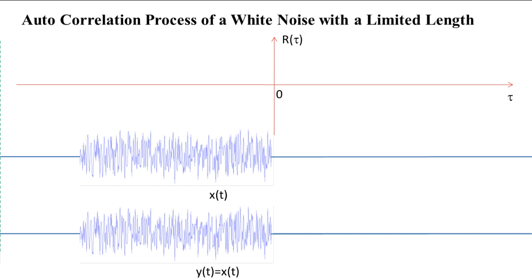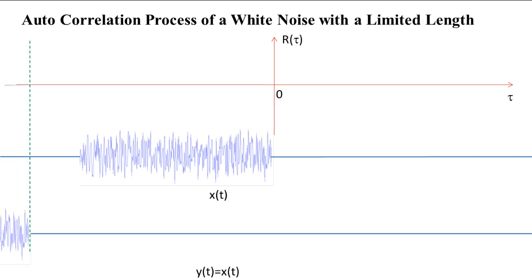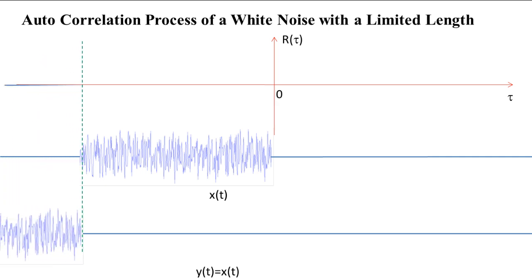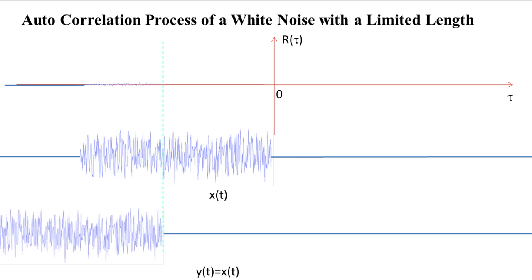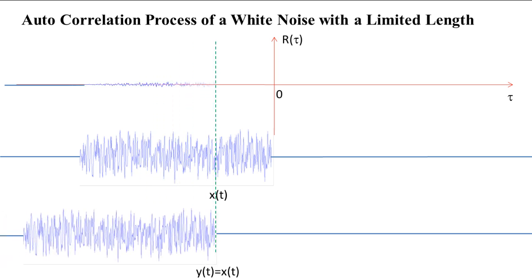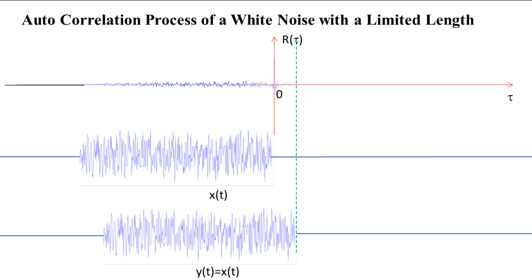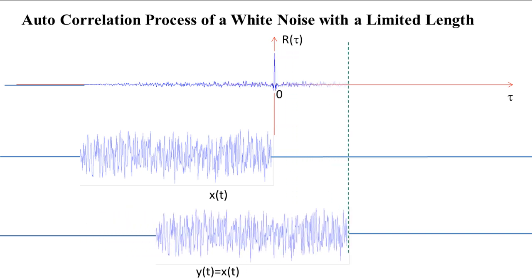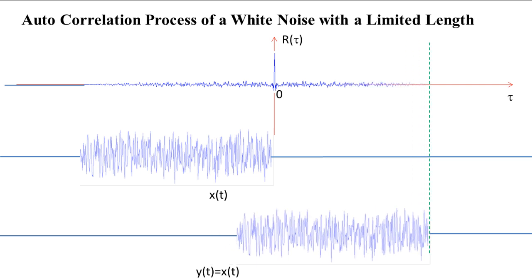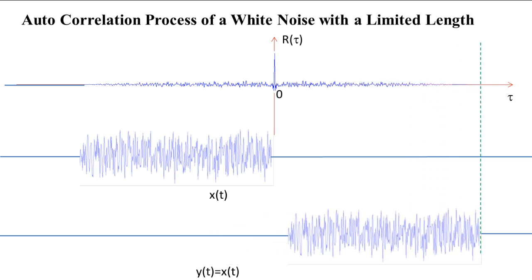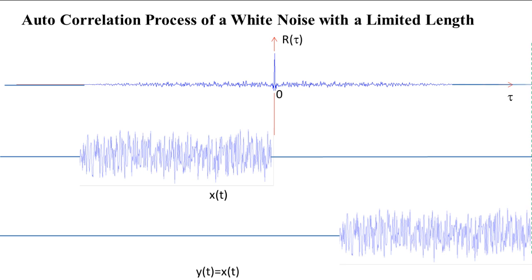This animation shows the autocorrelation process of a white noise with a limited length. Again, the peak of the autocorrelation function is reached when the time delay tau is zero — that is, when the two white noise waves are aligned precisely with each other on the time axis. This autocorrelation function has only one peak, and the rest of the correlation curve is nearly zero, meaning different parts of the white noise are uncorrelated. This single-peak feature can be used for robust and precise time delay measurement.